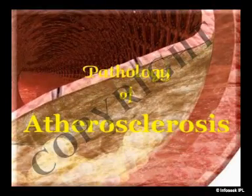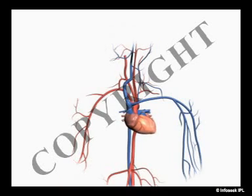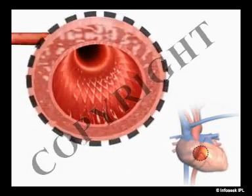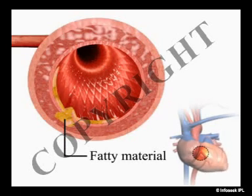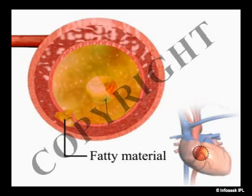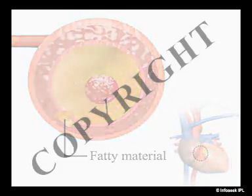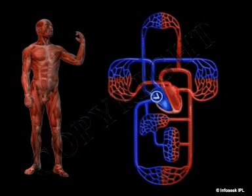Pathology of atherosclerosis. Atherosclerosis is a condition in which fatty material is deposited along the walls of arteries. This fatty material thickens, hardens and tends to block the arteries. This leads to a reduction in blood supply to the tissues which the artery supplies.